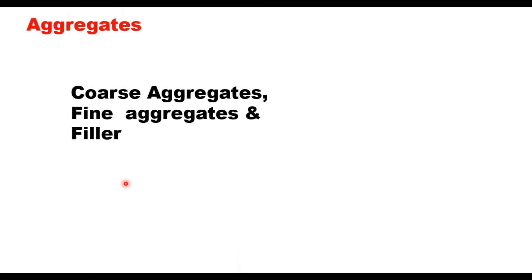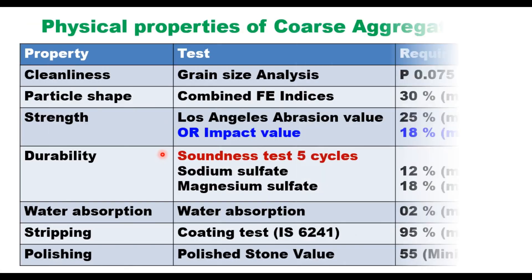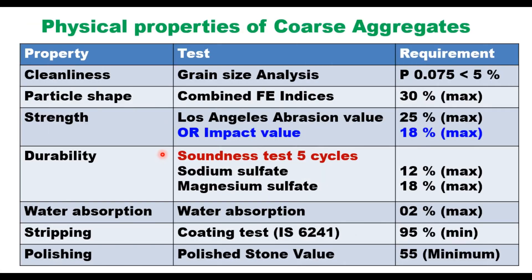For aggregates, you need coarse aggregates, fine aggregates, and filler. Coarse aggregates should have these properties as suggested in IRC-SP 79: cleanliness — aggregate passing 75 microns should be less than 5%; particle shape — combined flakiness and elongation index maximum 30%; strength determined either through Los Angeles Abrasion test or impact value; durability — soundness test conducted after 5 cycles with loss restricted to specified values; water absorption not more than 2%; stripping test not less than 95%. If SMA is used as a wearing course, polished stone value should be a minimum of 55.